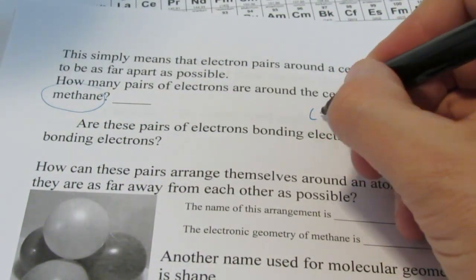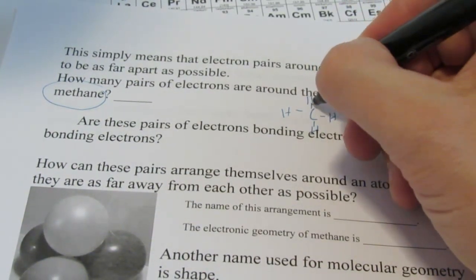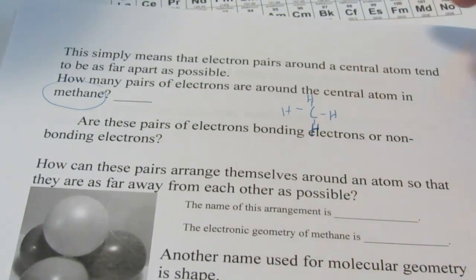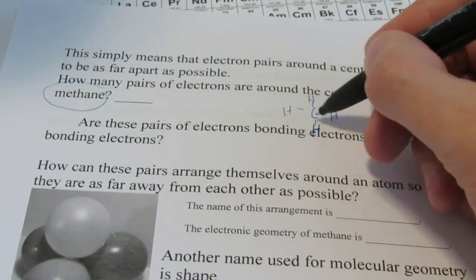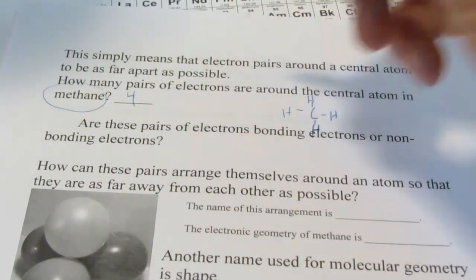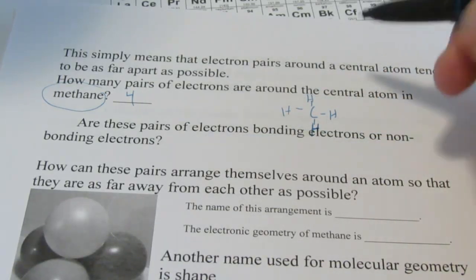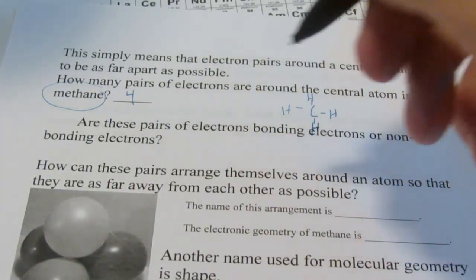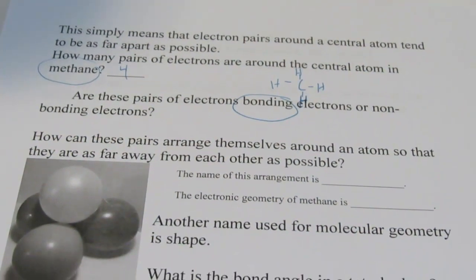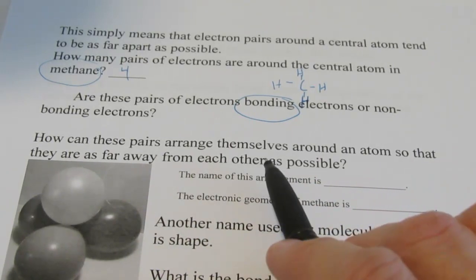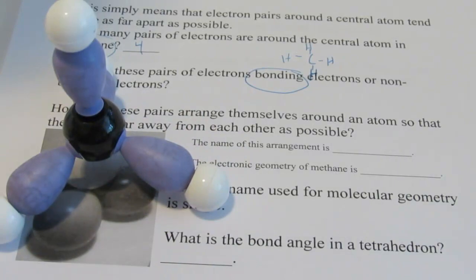Let's go back to methane. That's the one we just had up there. I'll draw a small version of the Lewis structure right here. We'll squeeze it in. Okay, there's my methane. How many pairs do we see around the central atom? Well, there's one, two, three, four pairs. Remember, four pairs is nice and stable. Are those pairs of electrons bonding, or are they non-bonding? Well, it looks like all of them are bonding. So, I'm going to circle bonding there. They're all four pairs bonding. So, how can these pairs arrange themselves around an atom so that they're as far away from each other as possible? There's our choices again.